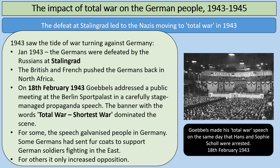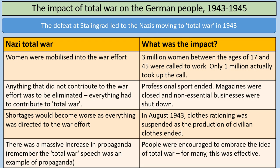An interesting aside: Goebbels made the total war speech on the same day that Hans and Sophie Scholl were arrested — the 18th of February 1943. In practice, one of the impacts of total war was that women were mobilized into the war effort. Three million women between the ages of 17 and 45 were called up to work, but only 1 million actually took up the call, showing that many women were reluctant to get involved. This was probably a legacy impact of Hitler's policies towards women in the 1930s.